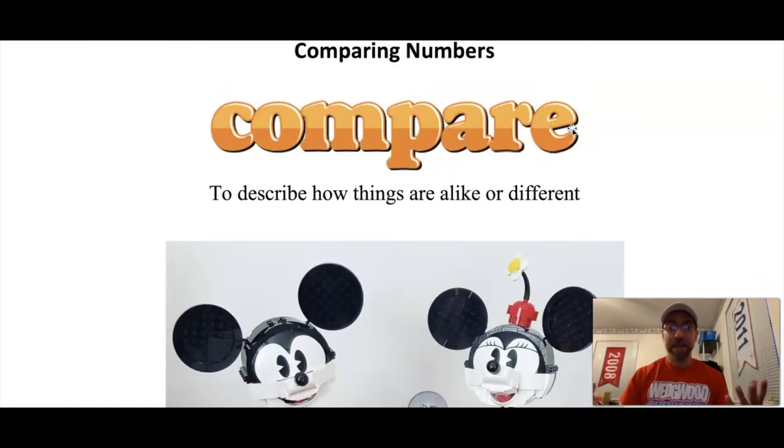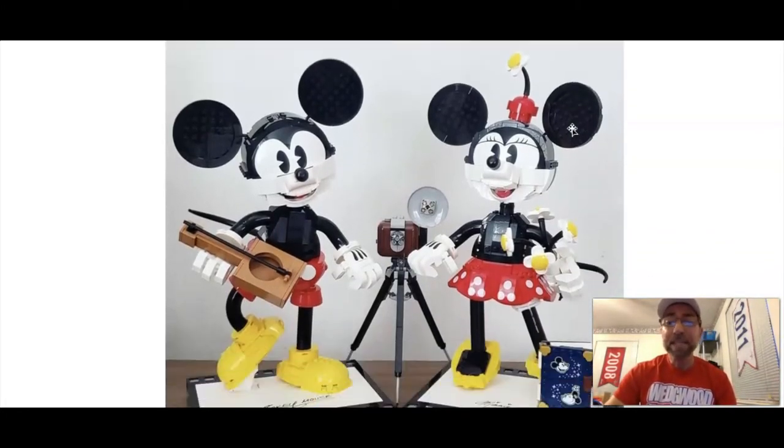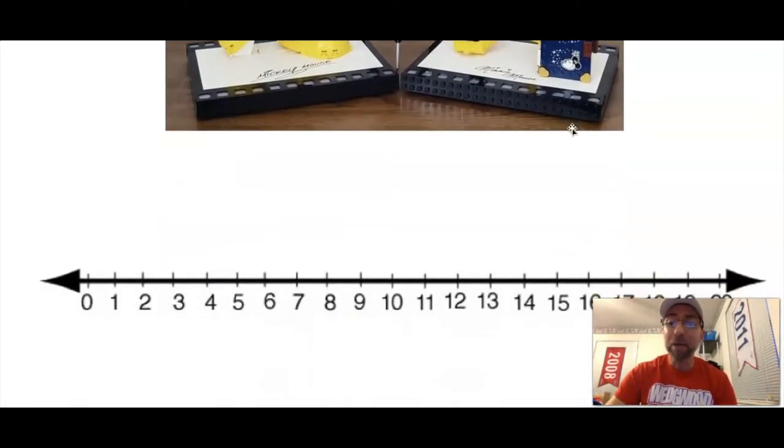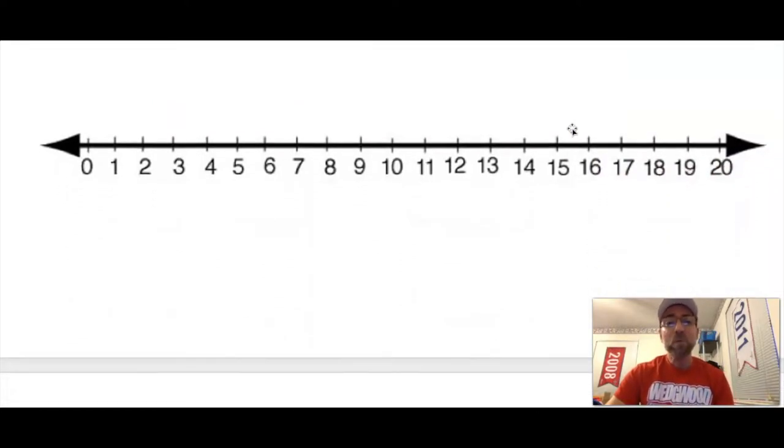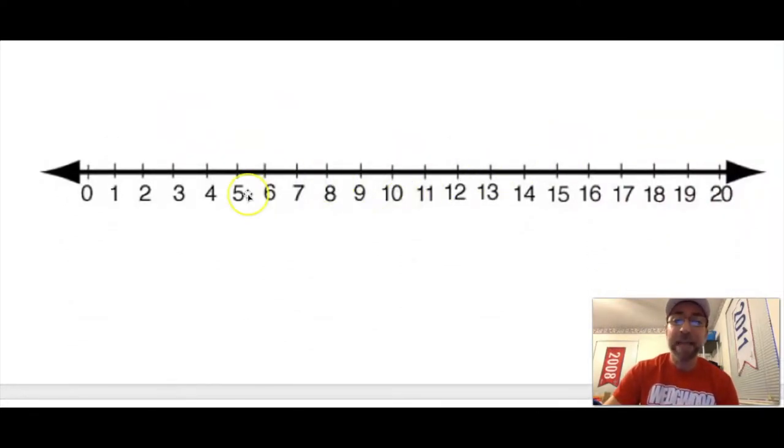We can compare objects by describing how they are alike or different. Well, the same thing is true about numbers. We have learned that we have a number line and a number line has arrows on the ends, there's numbers, and then there are tick marks, and every tick mark is named a different number. So I can compare numbers also.